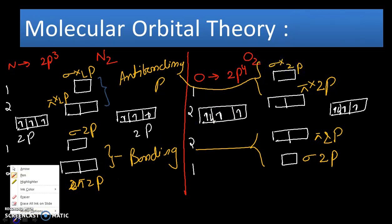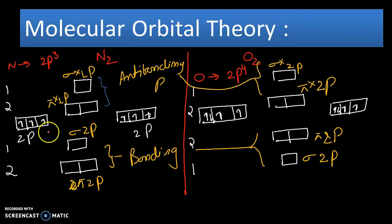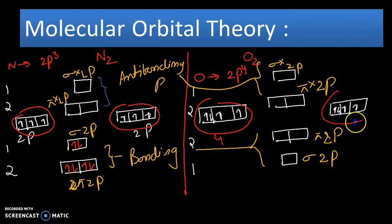Now let's fill electrons. How many electrons are there in N2 molecule p orbitals? Three from one atom, three from another atom, total six p electrons. In oxygen, there are four plus four, eight p electrons. Let's fill: one, two, three, four, five, six, seven, eight.